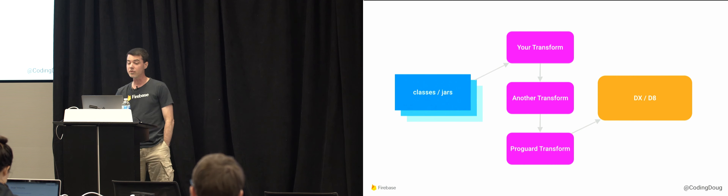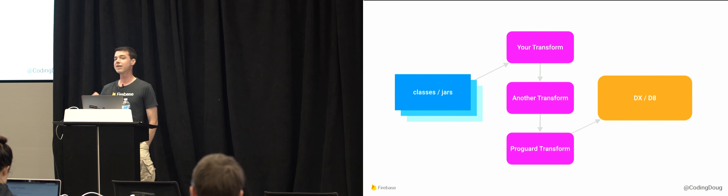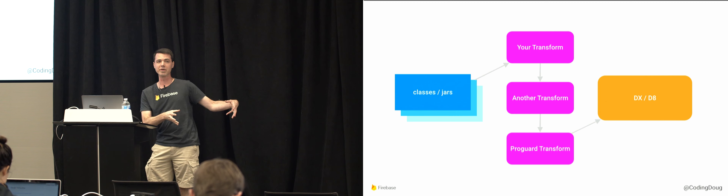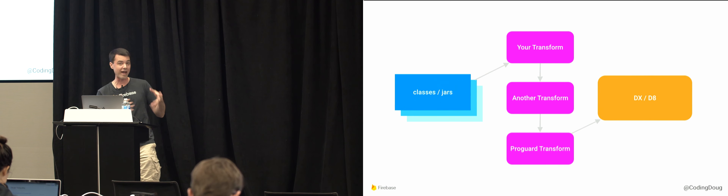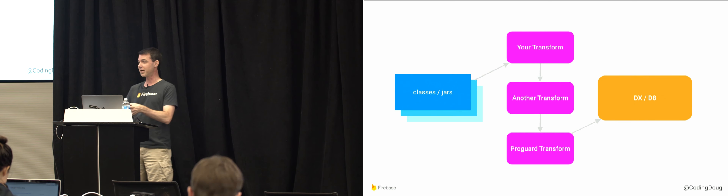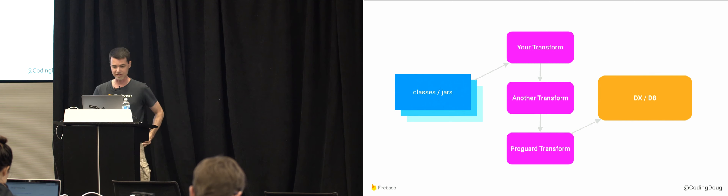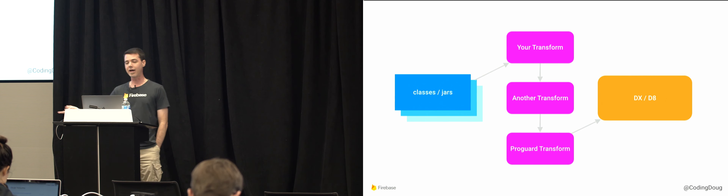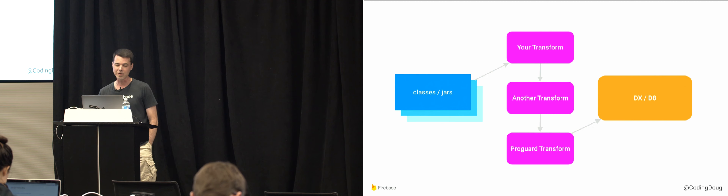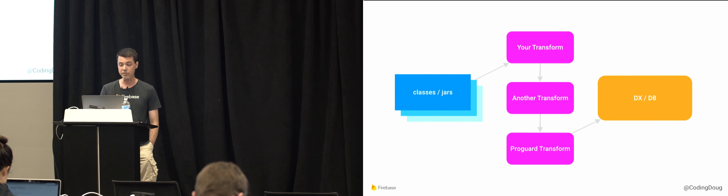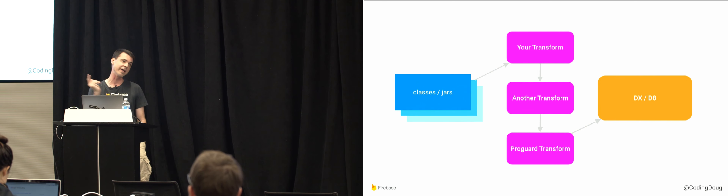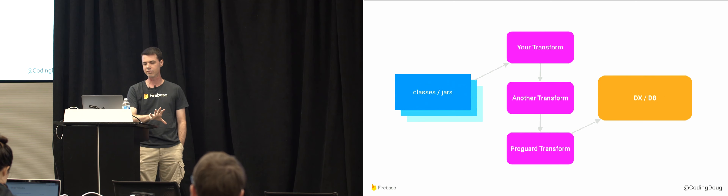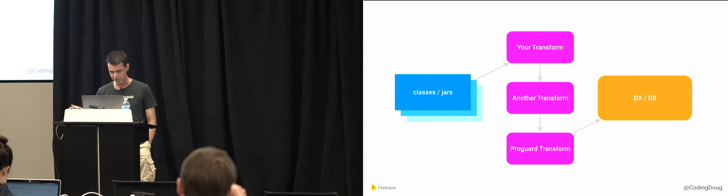With the Android Gradle build tools, you can now register transforms with an Android build. After classes and JARs are built, any registered transforms will process in order — with the last transform being ProGuard, which is itself implemented as a transform. All that output then gets sent to DX/D8. If you want to do bytecode manipulation on an Android build today, you pretty much have to use a transform. My project has a stripped-down minimal plugin available on GitHub.